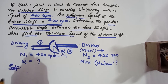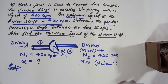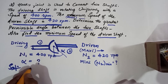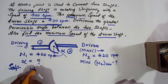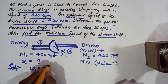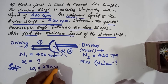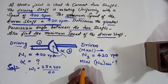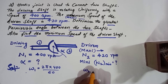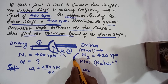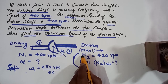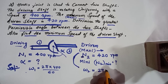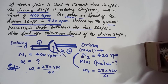These are the given values. Now we will calculate the angular speeds. Let omega 1 be the angular speed of the driving shaft: omega 1 = 2π × N1 / 60 = 2π × 400 / 60. We will also calculate the maximum angular speed of the driven shaft: omega 2 maximum = 2π × N2 / 60 = 2π × 420 / 60.